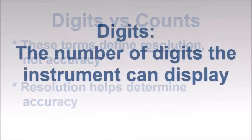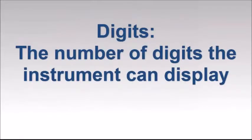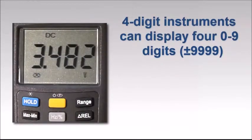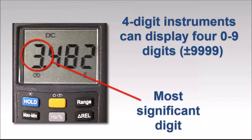Digits defines the number of digits an instrument can display. For example, a four-digit multimeter can display four zero through nine digits. This fairly simple concept becomes more complex when the leftmost digit, usually called the most significant digit, cannot display the full range of numbers.